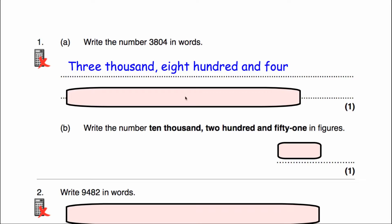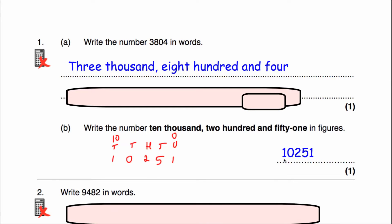Question 1B says write the number 10,251 in figures. So let's consider our place value: tens of thousands, thousands, hundreds, tens and units or ones. We've got 10,000, so 10,251. The answer would be 10,251.